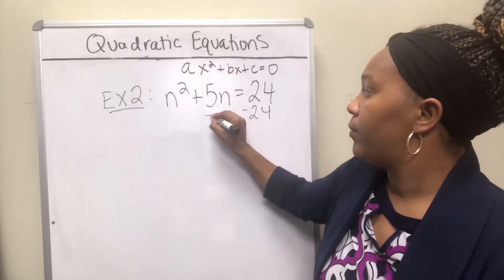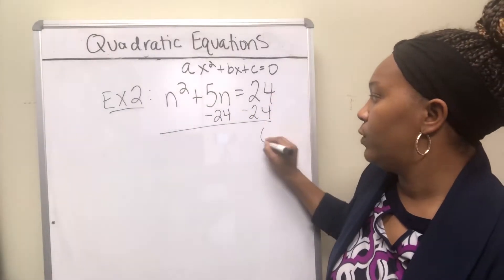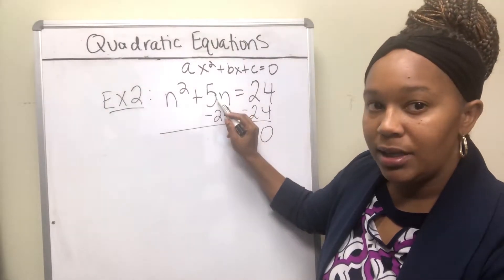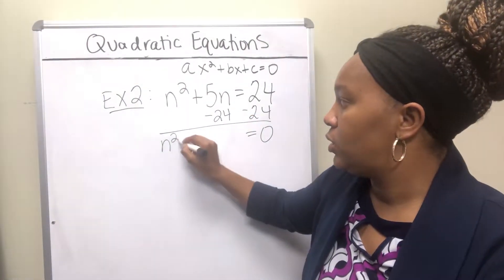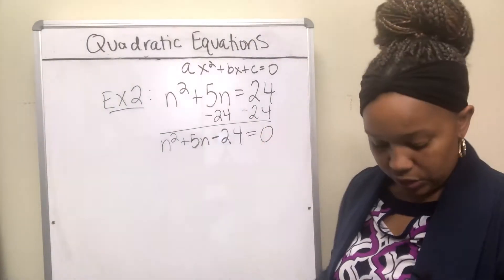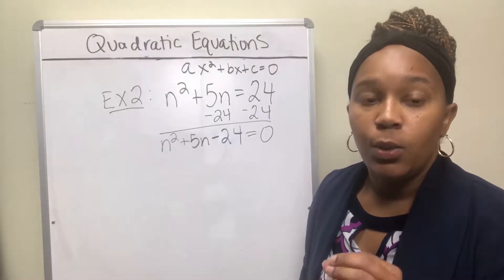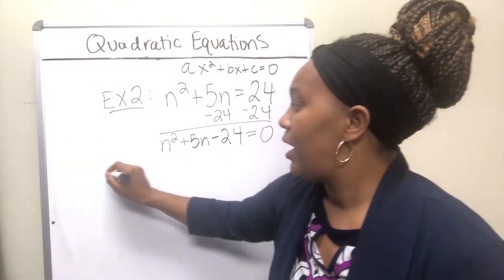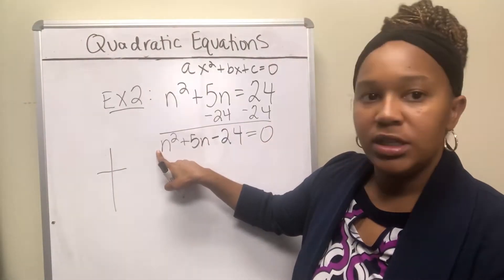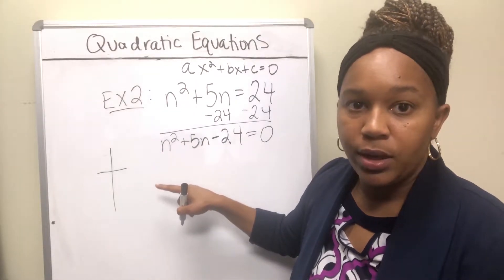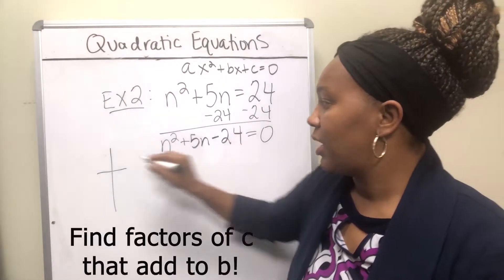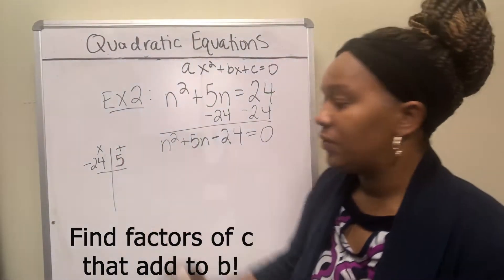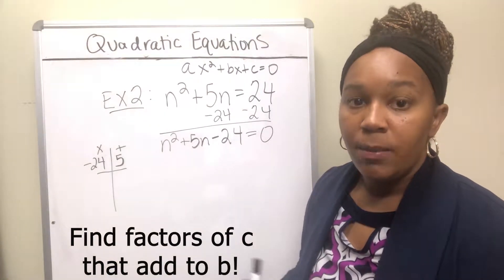I'm going to move the 24 over to get zero on one side: 24 minus 24 is zero. I can't combine the remaining terms because one has an n and the other doesn't, so that gives us n squared plus 5n minus 24 equals zero. To factor the left side, since there's no coefficient in front of n squared — an understood coefficient of 1 — we take factors of the c term, which is negative 24, that add to the b term, which is 5.